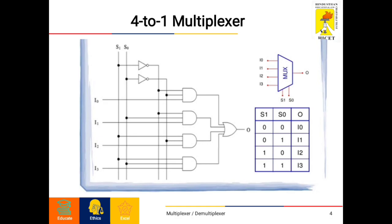For the truth table: when S1 and S0 are both 0, the output will be I0. For S1=0 and S0=1, the output will be I1. For S1=1 and S0=0, the output will be I2. For the last condition S1=1 and S0=1, the output will be I3.